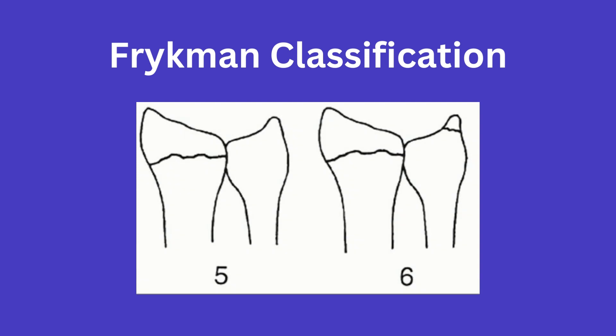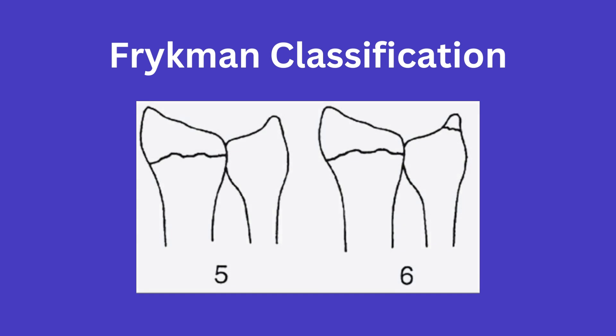Type 5 involves a fracture line that extends to involve the DRUJ (distal radioulnar joint). And type 6 is a type 5 plus an ulnar styloid fracture.